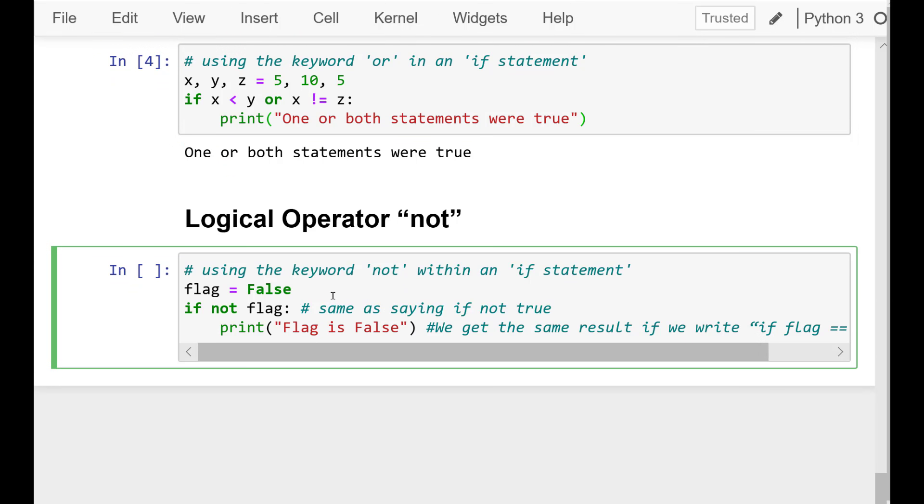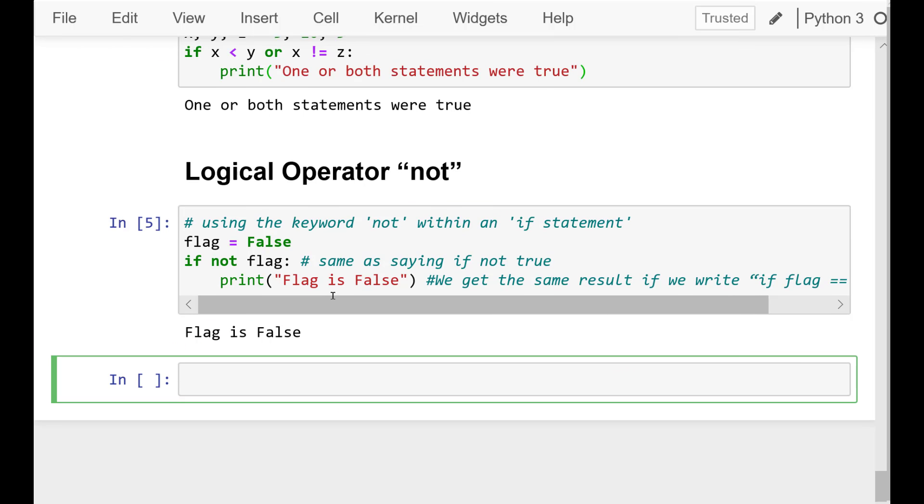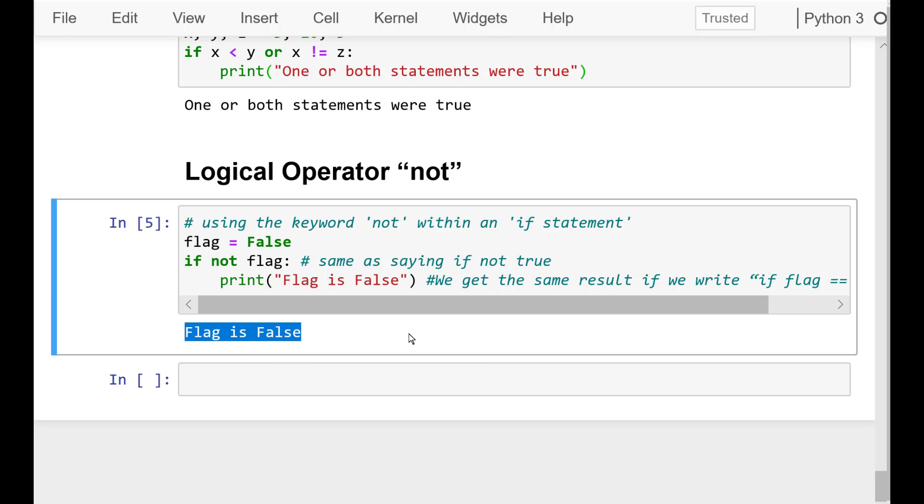If you run that cell, you'll notice that the result output is flag is false. This is due to the NOT operator, which took the opposite value of false and made the condition return true. And we get the same result if we write IF flag equals false.